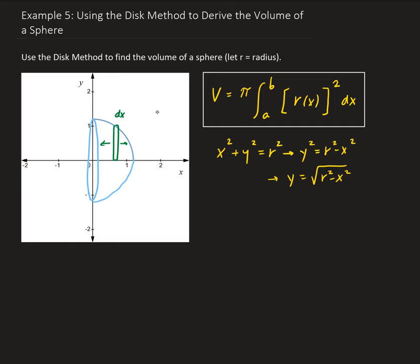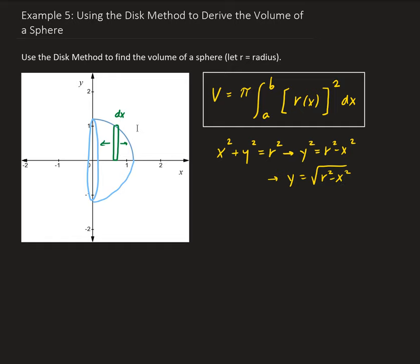The square root of r squared minus x squared gives us the top half of this circle. But remember, for our bounds, we're going to integrate just from zero to r. So the function for this part will be the square root of r squared minus x squared.